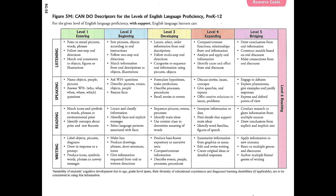A level 2 student might be required to produce something different from a level 4 student. A level 4 student would be able to discuss issues and concepts, give speeches and oral reports, and offer creative solutions to issues and problems. In writing, they might be able to summarize information from graphics or notes, edit and revise writing, and create original ideas or detailed responses. As you can see, it wouldn't make much sense to give a level 2 student the same assignment as a level 4 student, because giving both students the same assignment sets the level 2 student up for failure.